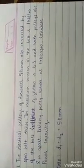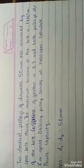The first numerical says: two identical pulleys of diameter 50 mm are connected by open belt drive. The maximum tension in the belt is 1 kN per meter of the belt. Coefficient of friction is 0.3 and both pulleys are 8 meter apart. Driving pulley rotates at 1400 rpm. Calculate power capacity.